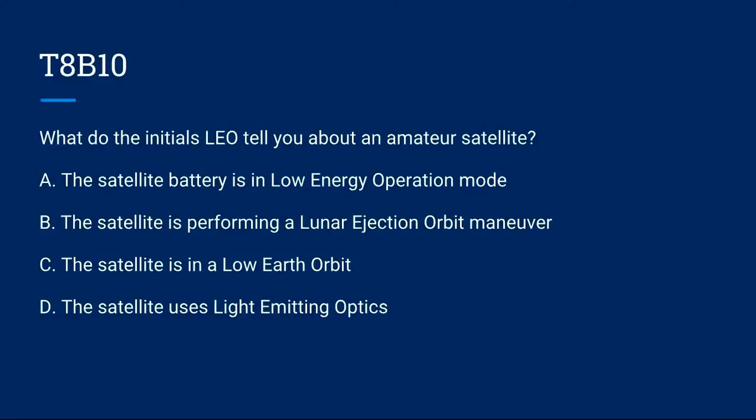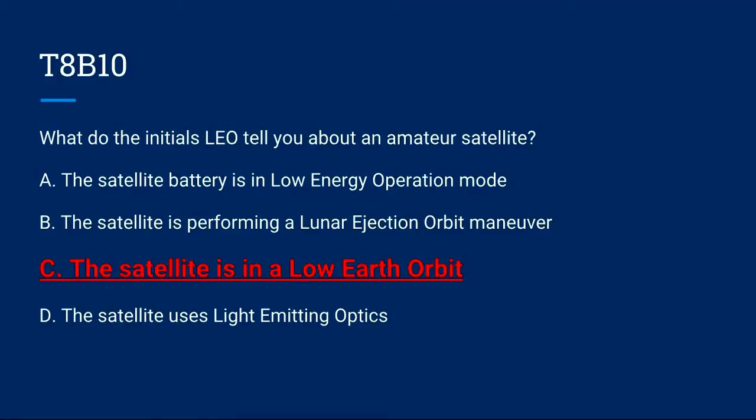T8B10: What do the initials LEO tell you about an amateur satellite? A. The satellite battery is in low energy operation mode. B. The satellite is performing a lunar ejection orbit maneuver. C. The satellite is in low Earth orbit. Or D. The satellite uses light emitting optics. The correct answer is C: the satellite is in a low Earth orbit.